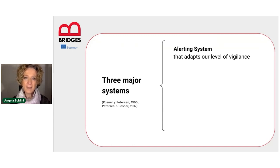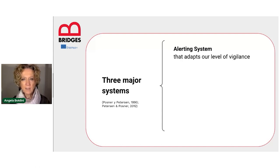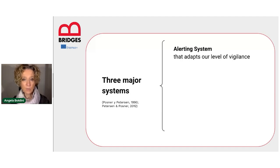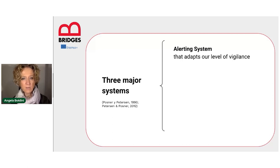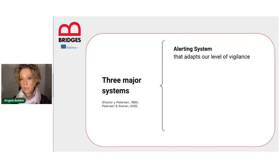The first one is the alerting network. This is a basic attention network, a sort of vigilant system that maintains the optimal state of alert at any given time and according to circumstances. This is the network that tells us, for example, if everything is right around us or not. It's the network that manages the resetting or reshaping of our attention in case, for example, of a sudden alarm.